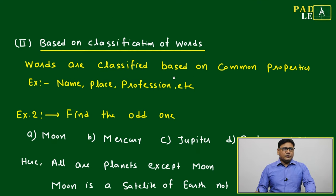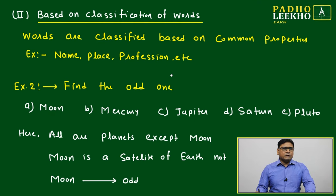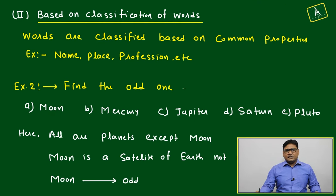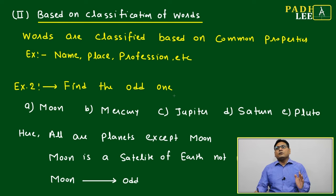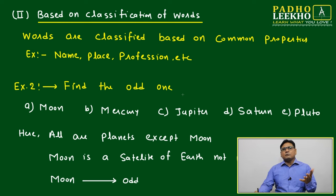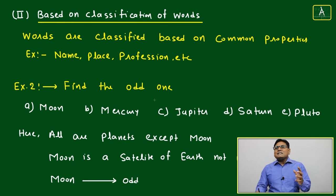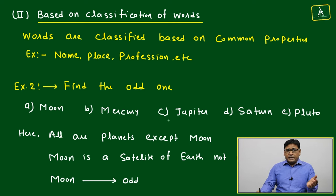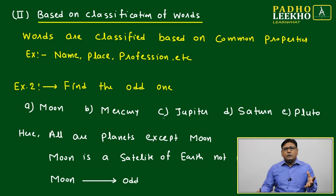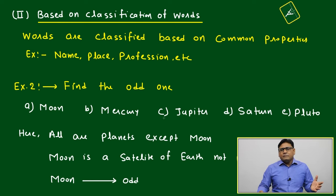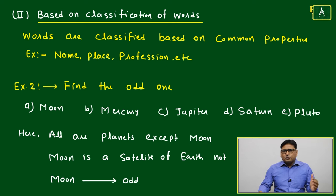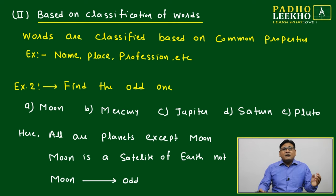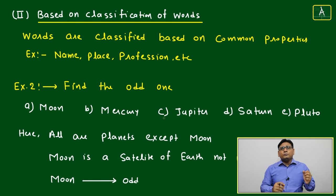We'll move on to the second category — classification based on words. Words may be classified based on certain common properties, such as a proper name, noun, pronoun, place, profession, or other common attributes. Based on those shared properties, words can be grouped together or removed from a particular group.